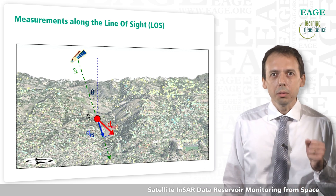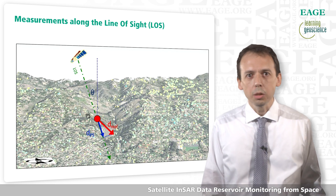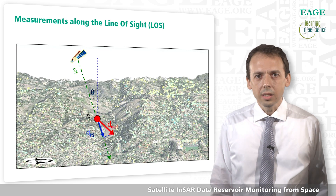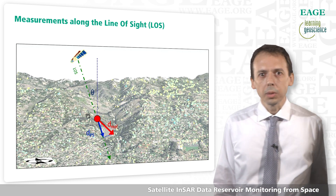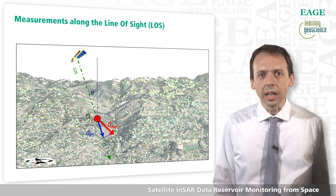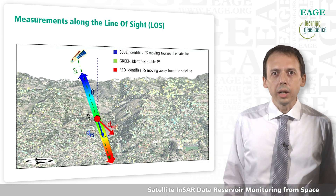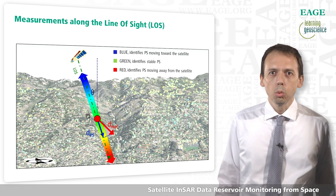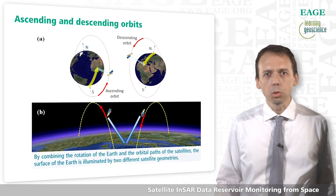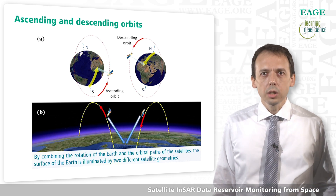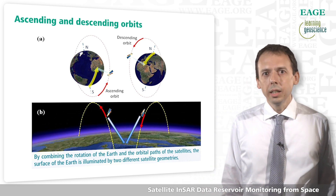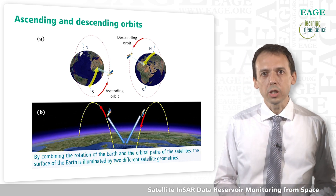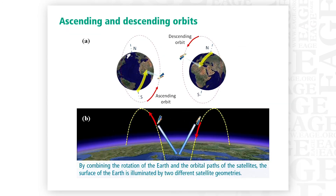What are we actually measuring? Just one component of the 3D displacement vector affecting a certain radar target — the projection of the 3D vector along the line of sight of the satellite. By combining the rotation of the Earth and the orbital paths of the satellites, it's possible to illuminate any area on Earth using two different satellite geometries, and so it's possible to combine the data and extract vertical and east-west displacements. Unfortunately, due to the acquisition geometry and the near-polar orbits, we are not sensitive to north-south displacements.